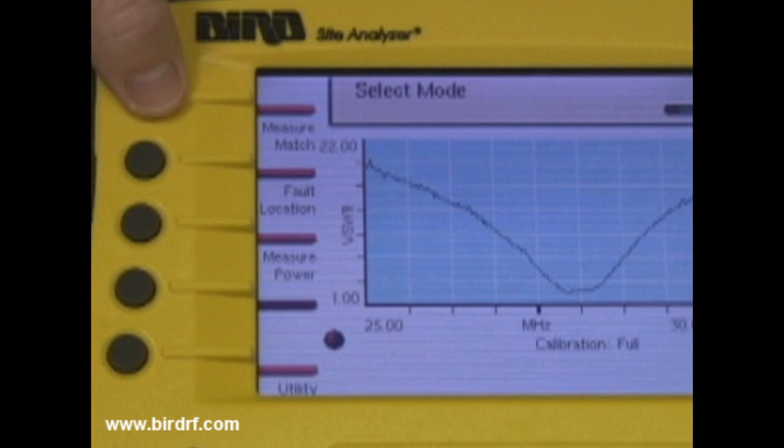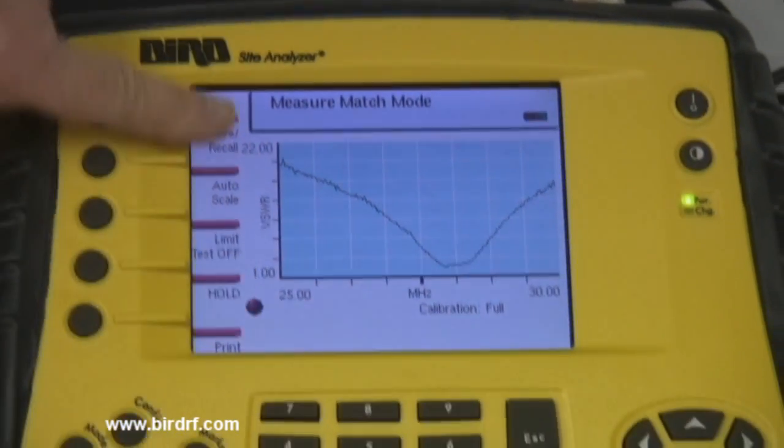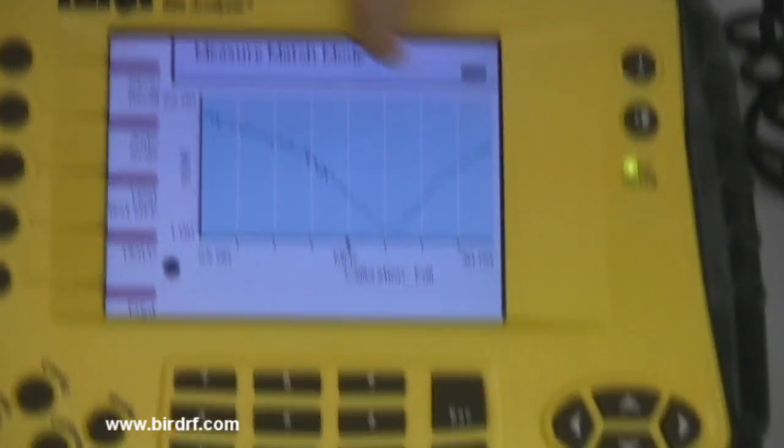By pressing the measure match mode button located on the left hand side of the sight analyzer top button, the VSWR of the antenna will be displayed.